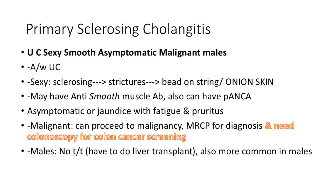Primary sclerosing cholangitis is associated with ulcerative colitis and presents with sclerosing strictures resembling beads on a string with an onion-skin appearance. It may involve anti-smooth muscle antibody and p-ANCA. Patients experience jaundice, fatigue, and pruritus. Malignant transformation requires MRCP for diagnosis, and colonoscopy is needed for cancer screening. Liver transplant is the only treatment option.